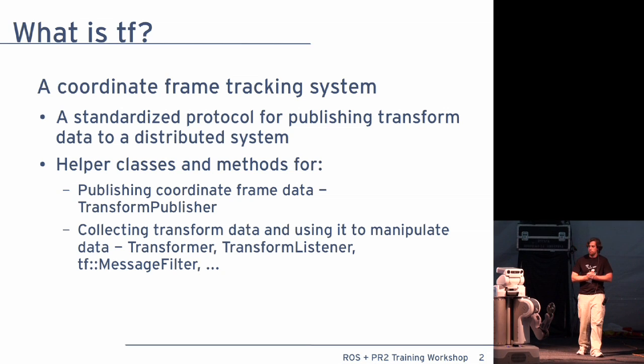What is TF? TF is basically a library that runs inside of Ross, which keeps track of all the coordinate frames within the robot. It is not a centralized service. It is basically a protocol with which many different nodes will communicate about the state of the robot, and there's no central storage or anything.